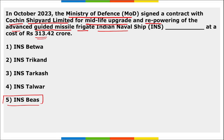After completing the midlife upgrade and repowering in 2026, INS Beas will join the Indian Navy's fleet. It was originally built by GRSE — Garden Reach Shipbuilders and Engineers Limited, headquartered in Kolkata, West Bengal.